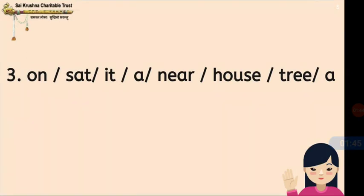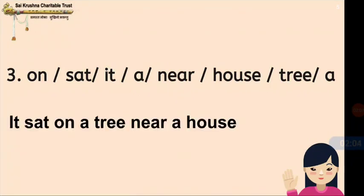Third question: the words are 'on, sat, a, near, house, tree, a.' Try children. The answer is: It sat on a tree near a house.